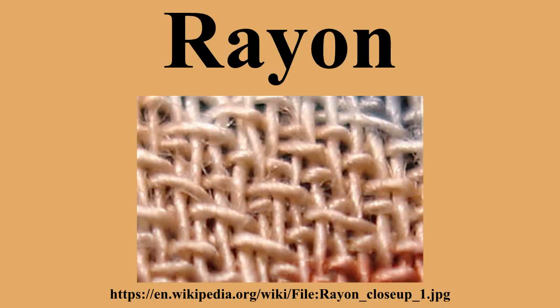The rayon filaments are stretched, known as drawing, to straighten out the fibers. The fibers are then washed to remove any residual chemicals. If filament fibers are desired, the process ends here. The filaments are cut down when producing staple fibers.